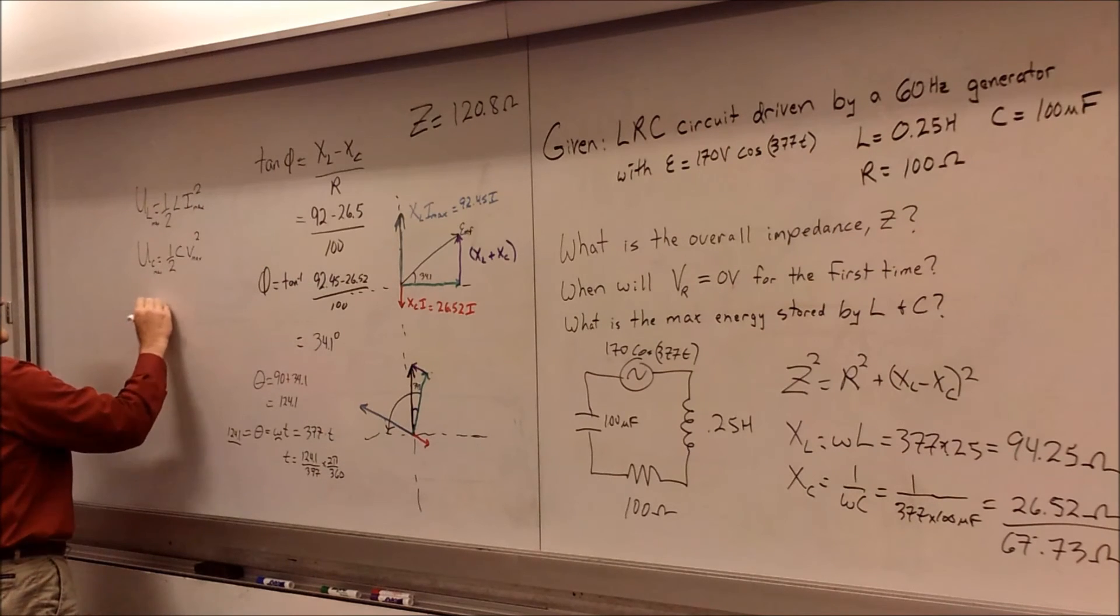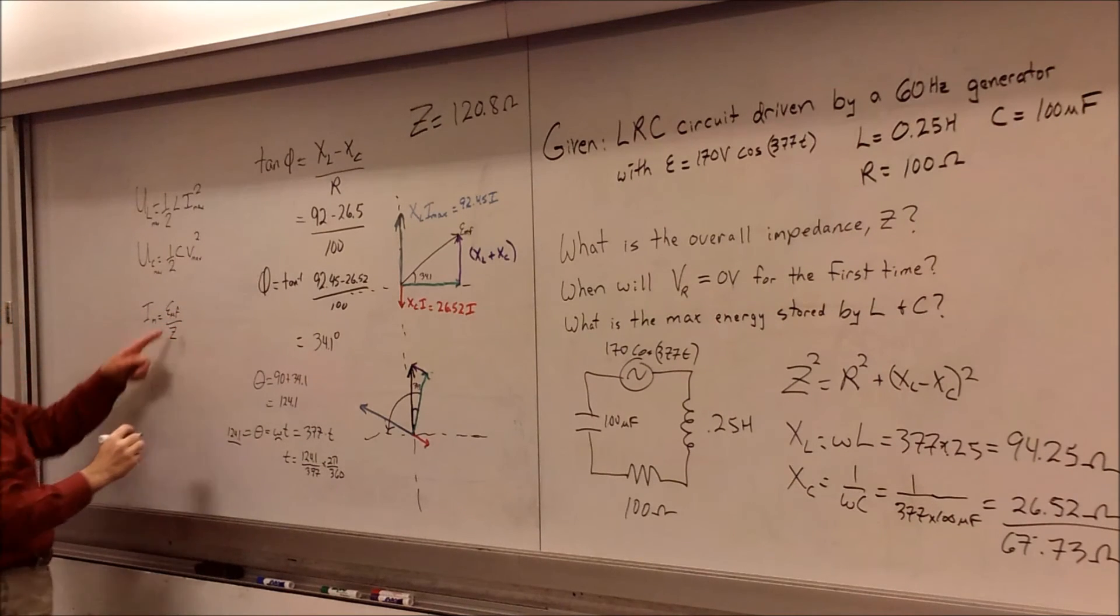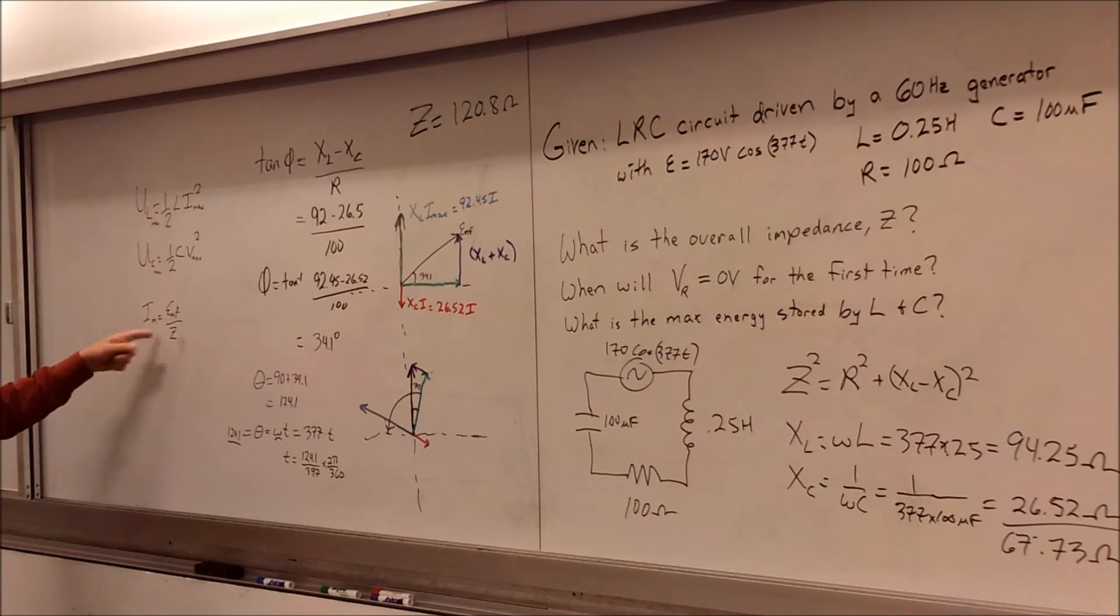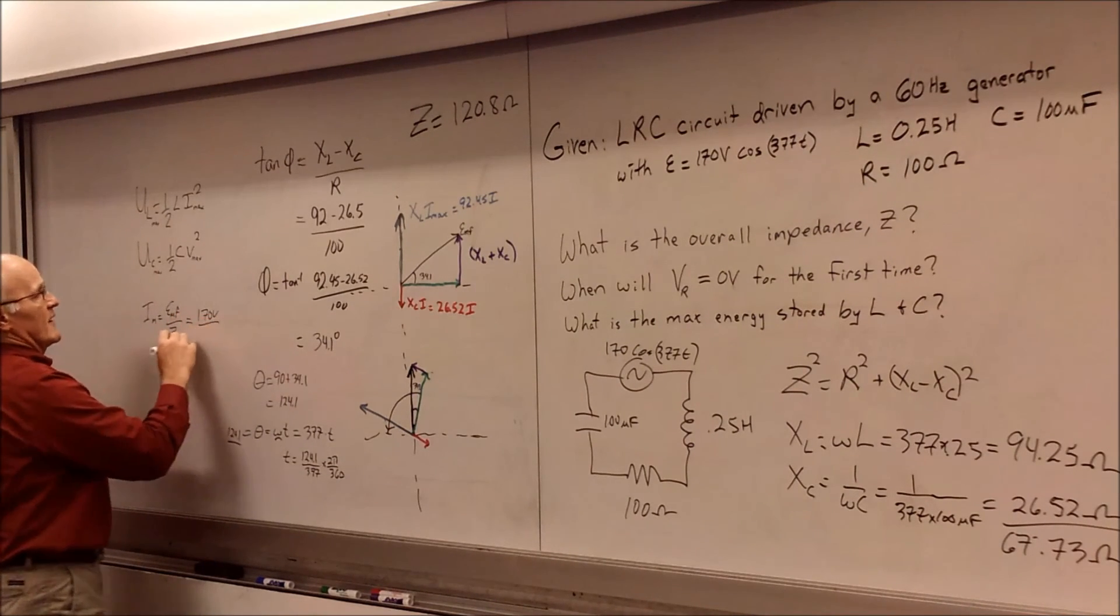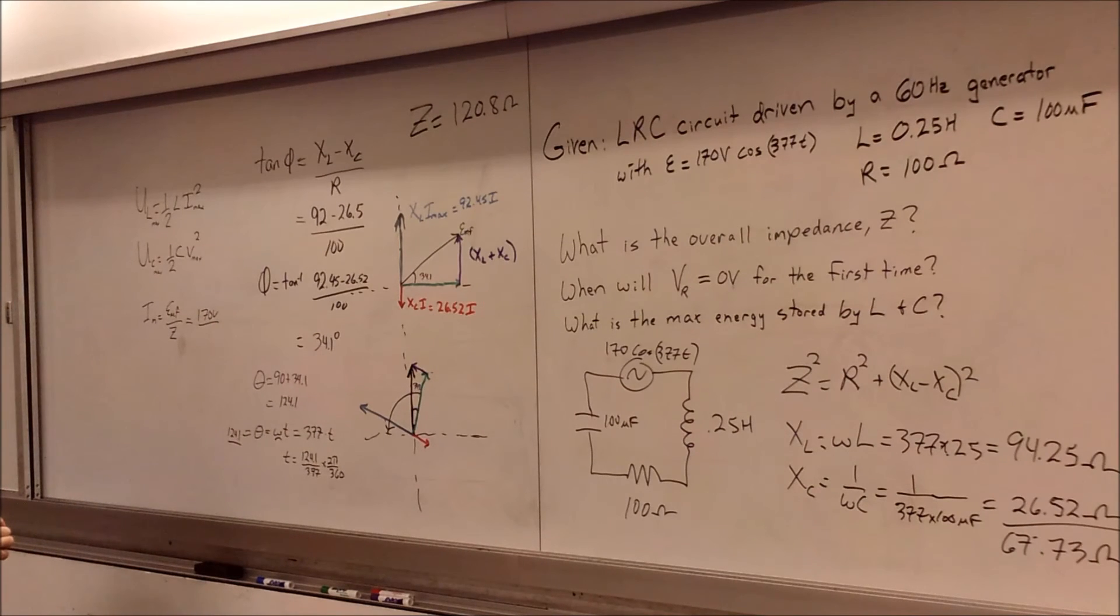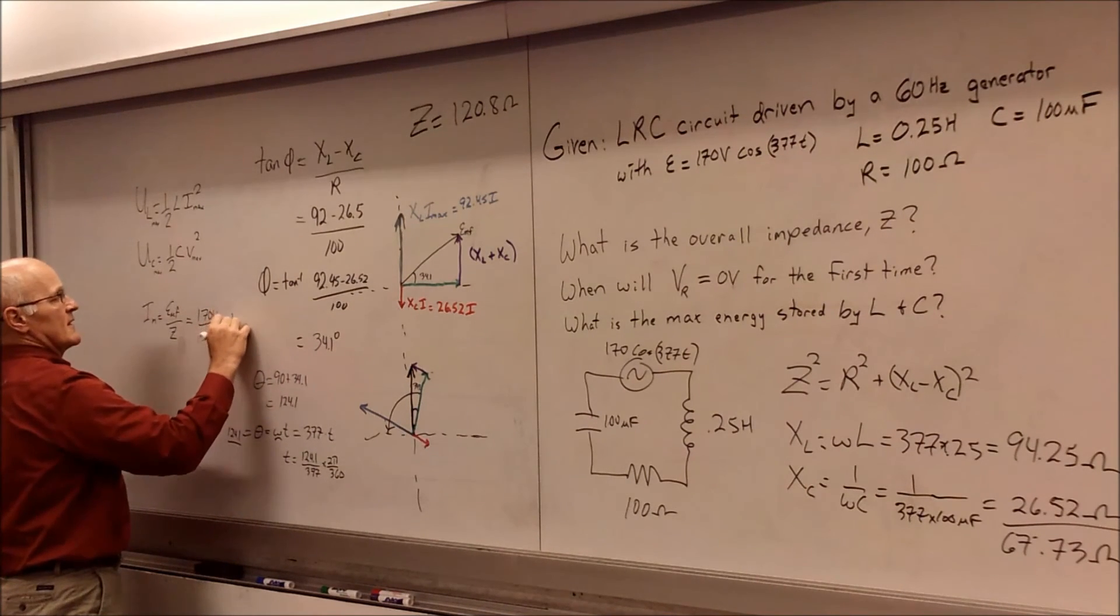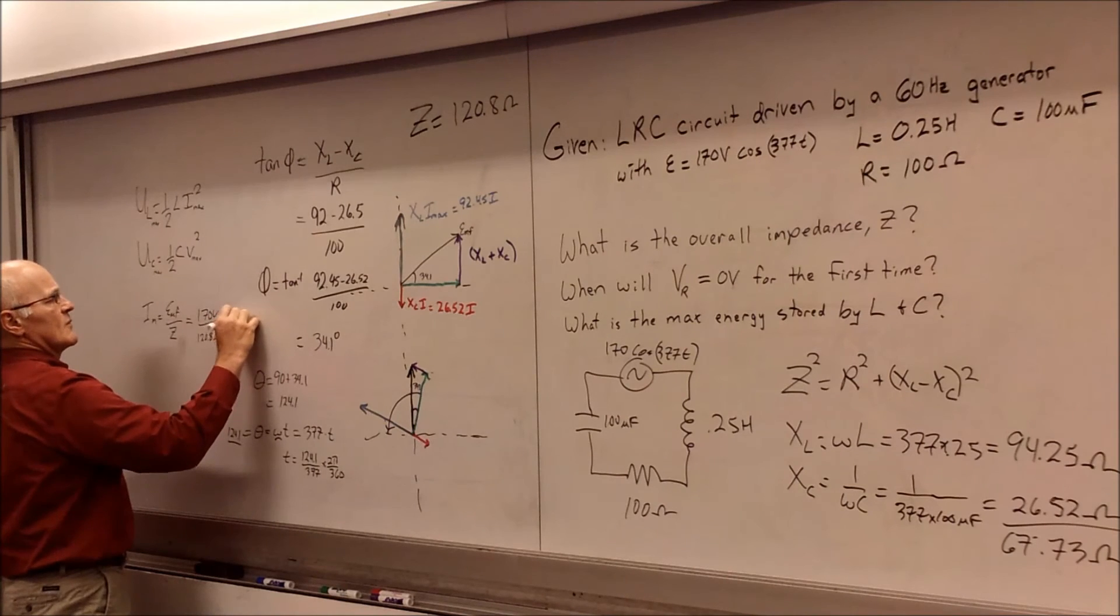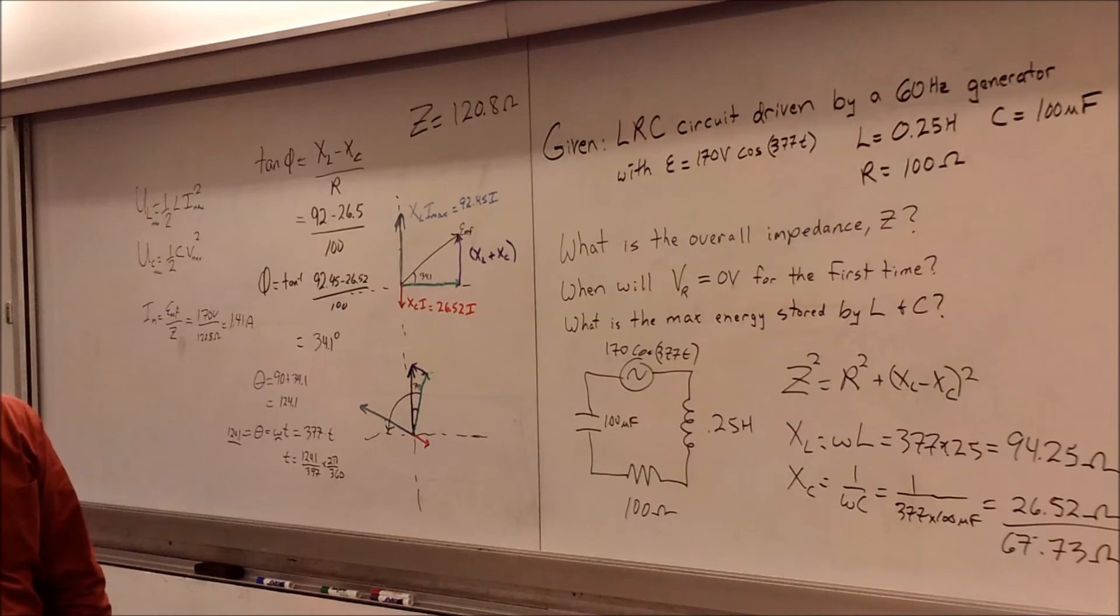So how do we figure out the max current? Well, the max current is given by Imax equals EMF divided by Z or V equals I R. And so we have to go ahead and plug in our voltage of 170 volts and divide that by our Z value that we had earlier. And so our Z value is 120.8. And so I'm going to go ahead and calculate that out. I think we get something like 1.41 amps. And I'll check that just to make sure. And yes, 1.41 amps.